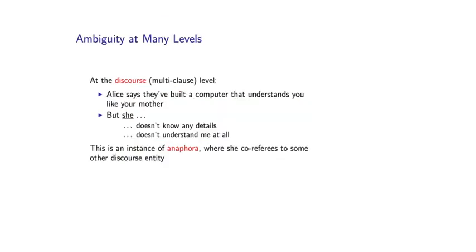So yet another level of ambiguity is at the discourse level. And what I'm going to show you here is an instance of anaphora. This is the problem of taking a pronoun, for example, she, and resolving it to the entity that it refers to in the world. So let's again assume that we have our sentence, except here I have Alice says as the start of the sentence. And let's say the continuation is, but she doesn't know any details.